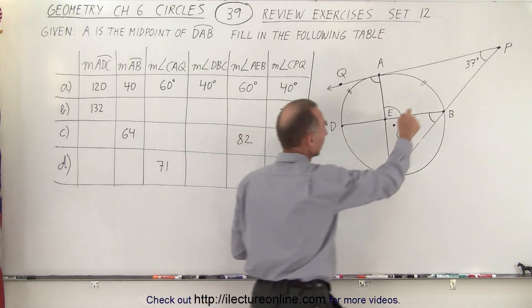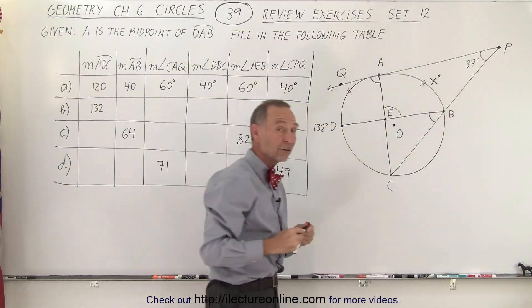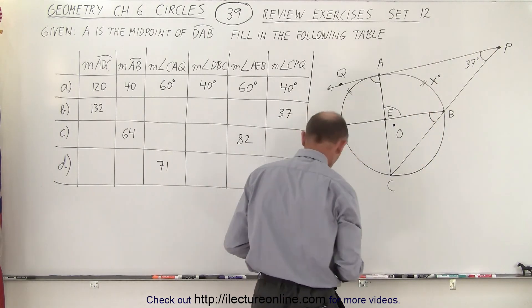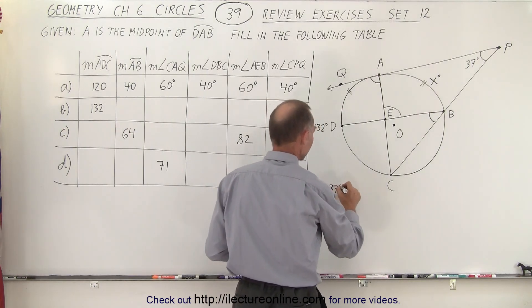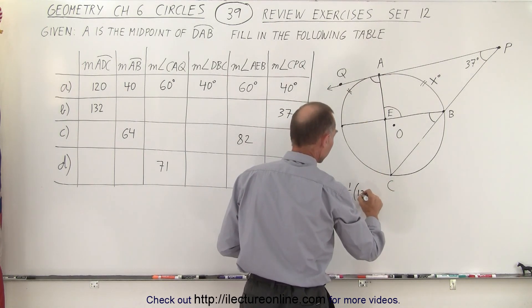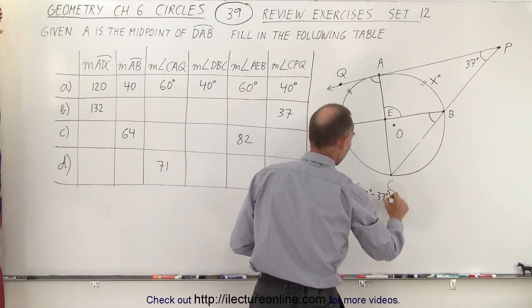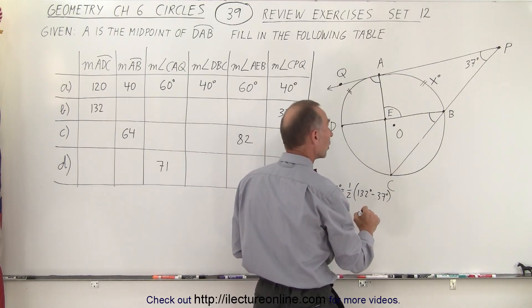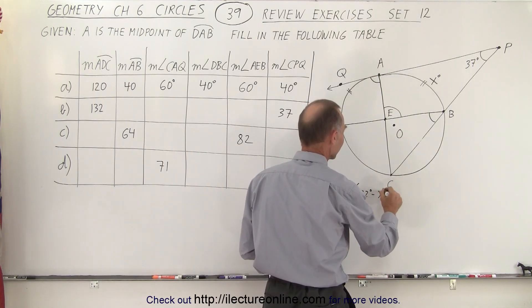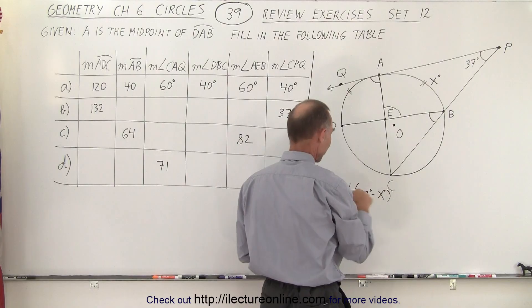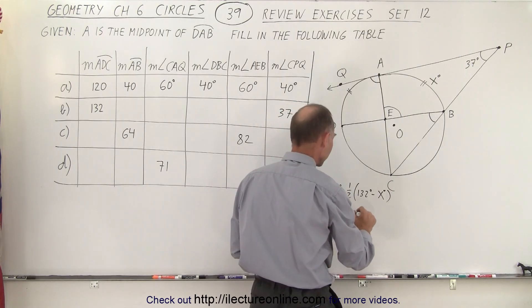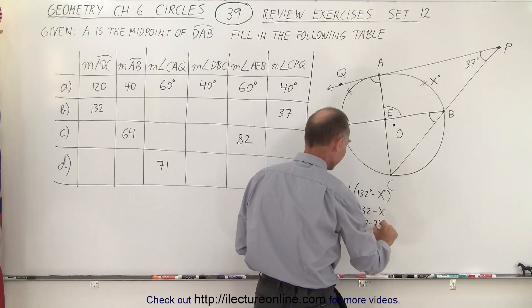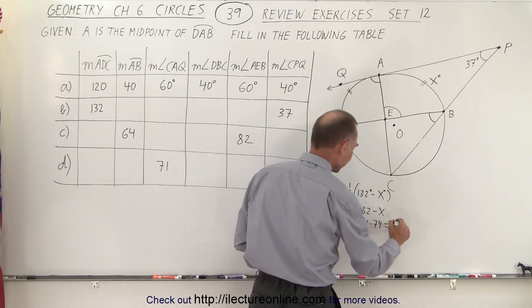Let's call this arc measure X degrees. We know that 37 degrees equals one half the difference between 132 and X. Multiply everything by 2 we get 74 equals 132 minus X. Therefore X degrees equals 132 minus 74. Subtract 74 from 132 gives us 58 degrees.